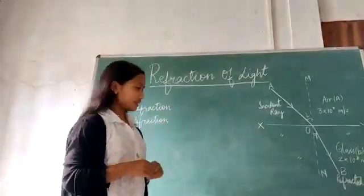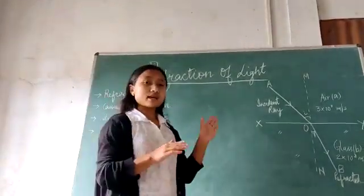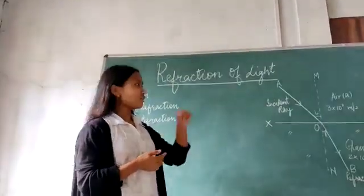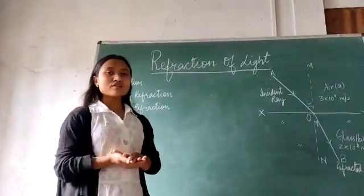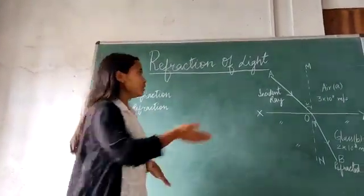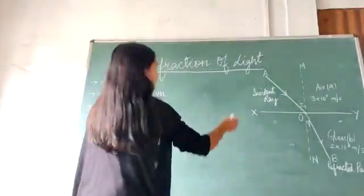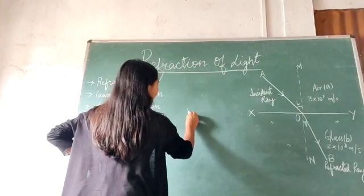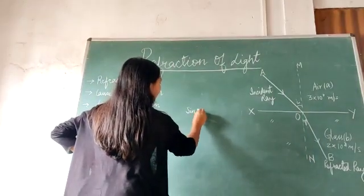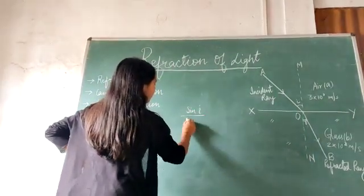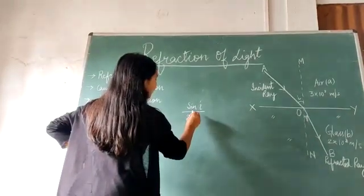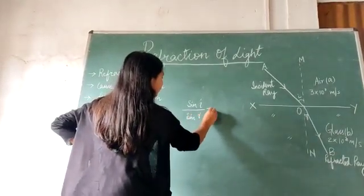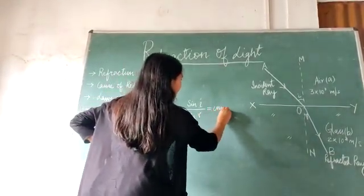Number two, it is that the ratio of the angle of incidence to the angle of refraction is a constant for the two media. That is, from this figure, we can write up, the ratio of sine of angle of incidence by sine of angle of refraction is a constant.